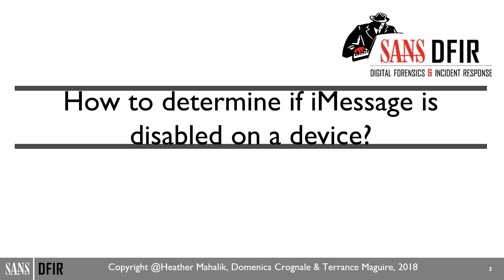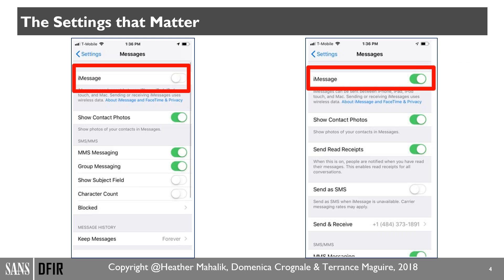Looking at the Settings view: on the left-hand side we can see iMessage is turned off, and on the right-hand side I have a different iPhone with iMessage turned on. You'll notice it says iMessages can be sent between iPhone, iPad, iPod Touch, and Mac, and sending or receiving uses wireless data. This is something we could use to place a user in a location based on iMessage being on or off. I try to keep everything consistent — iMessage turned off on the left, iMessage turned on on the right.